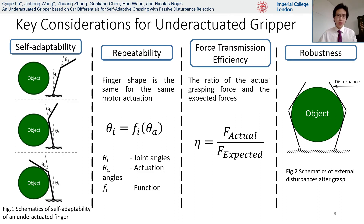As shown on this figure, the simplest form of adaptation can be shown as the ability of moving other joints of fingers after the movement of one or more of the other joints were limited by the object. Secondly, repeatability is the mechanism's capability to maintain the same finger shape with the same motor actuation. It is a favourable feature because the control of the mechanism can be easily modelled using prototype-defined functions.